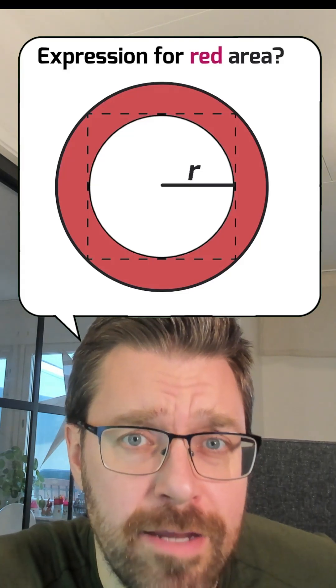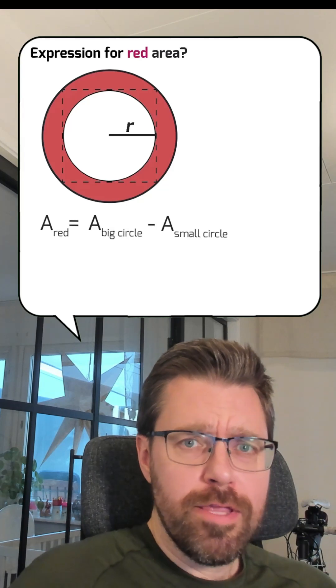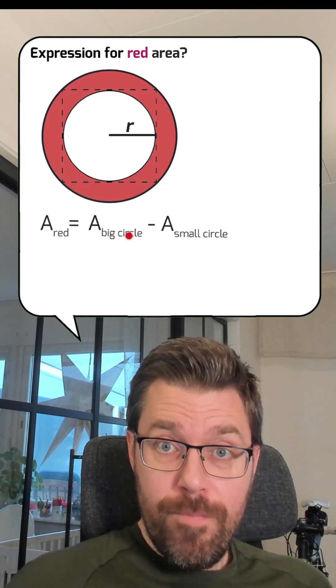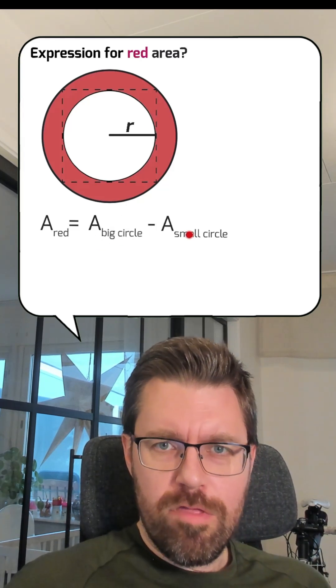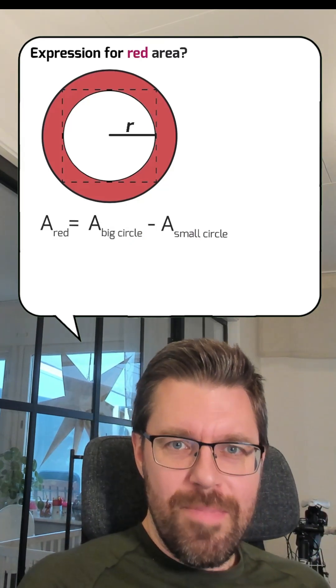We want to find an expression for the red area between these two circles. You've got the red area if you take area of big circle minus area of small circle, like if you paint the whole thing and then erase the area in the middle.